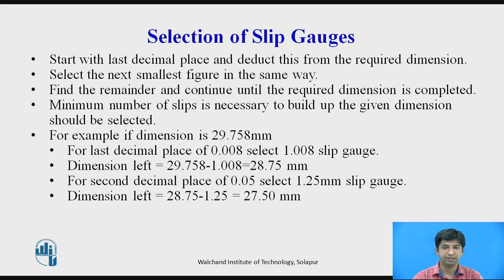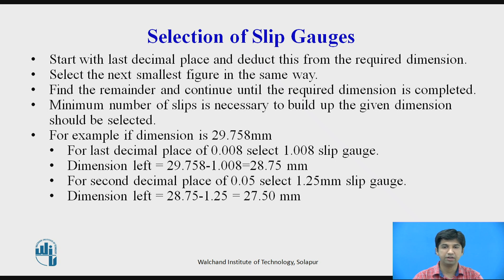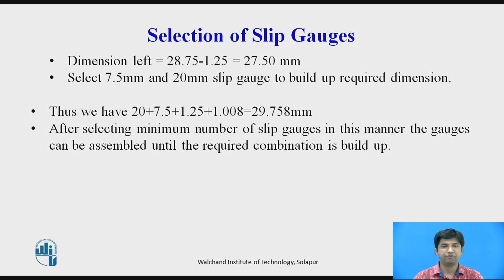Subtracting: 29.758 − 1.008 = 28.75 mm remaining. For the second decimal place of 0.05, select the 1.25 mm slip gauge; dimension left is 28.75 − 1.25 = 27.50 mm. Then select 7.5 mm and 20 mm slip gauges to build up the required dimension. Thus: 20 + 7.5 + 1.25 + 1.008 = 29.758 mm.